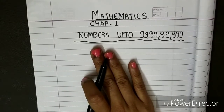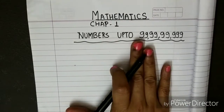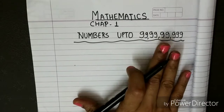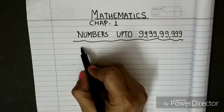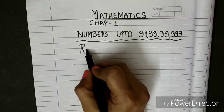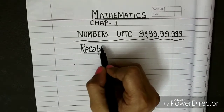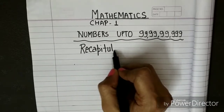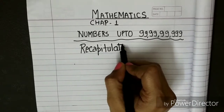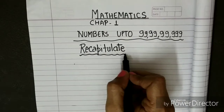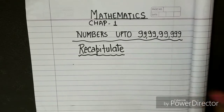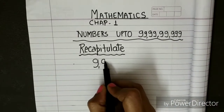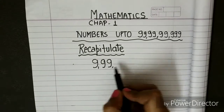We are going to start with the new chapter: numbers up to 99 crore 99 lakh 99999. Before starting, we are going to revise — recapitulate the previous concepts done in Class 4. In Class 4, you have done the chapter numbers up to 9 lakh 99999. Yes, you have already done this chapter and already know the digits up to 9 lakh 99999.